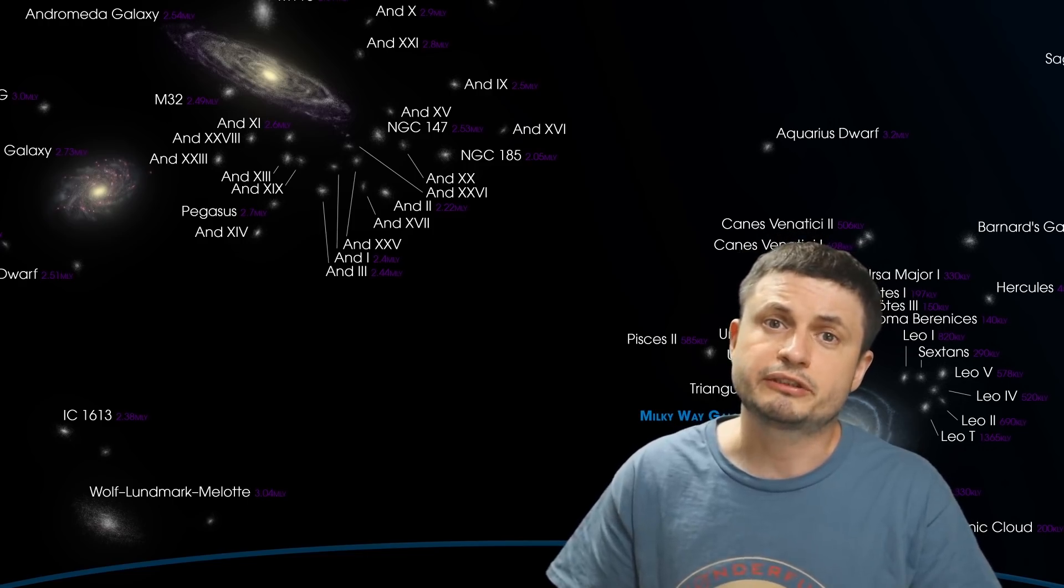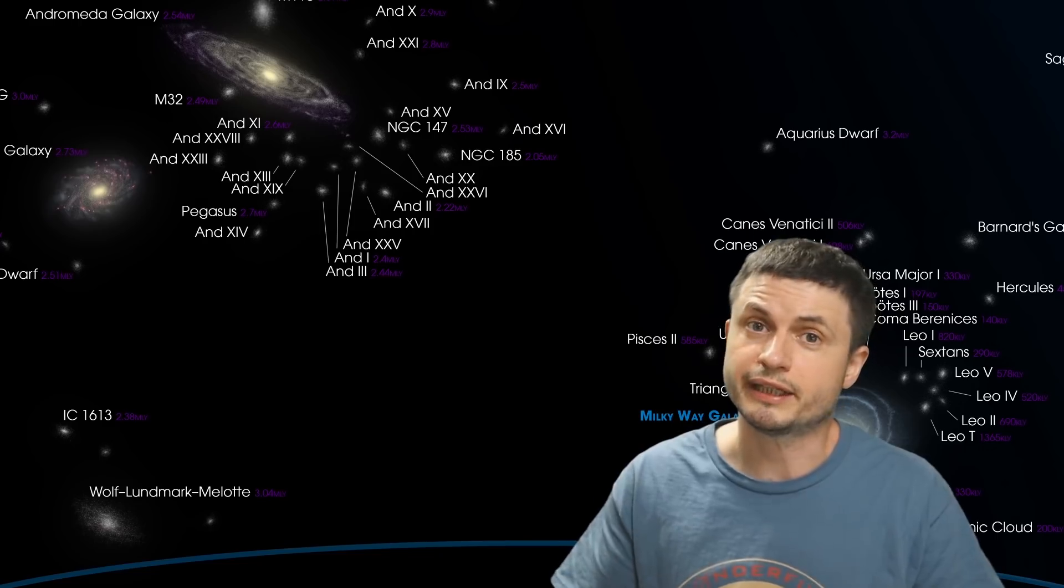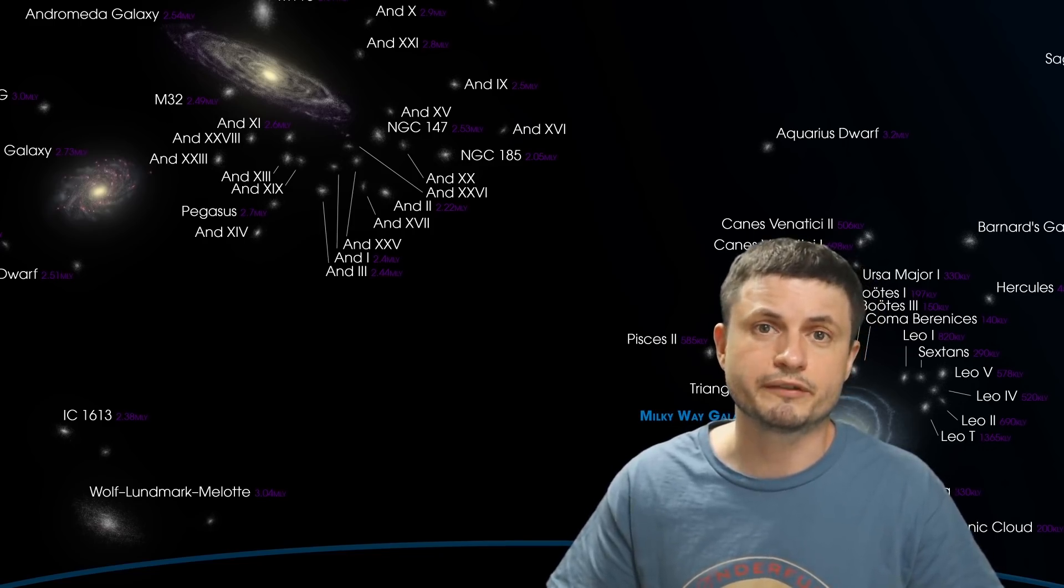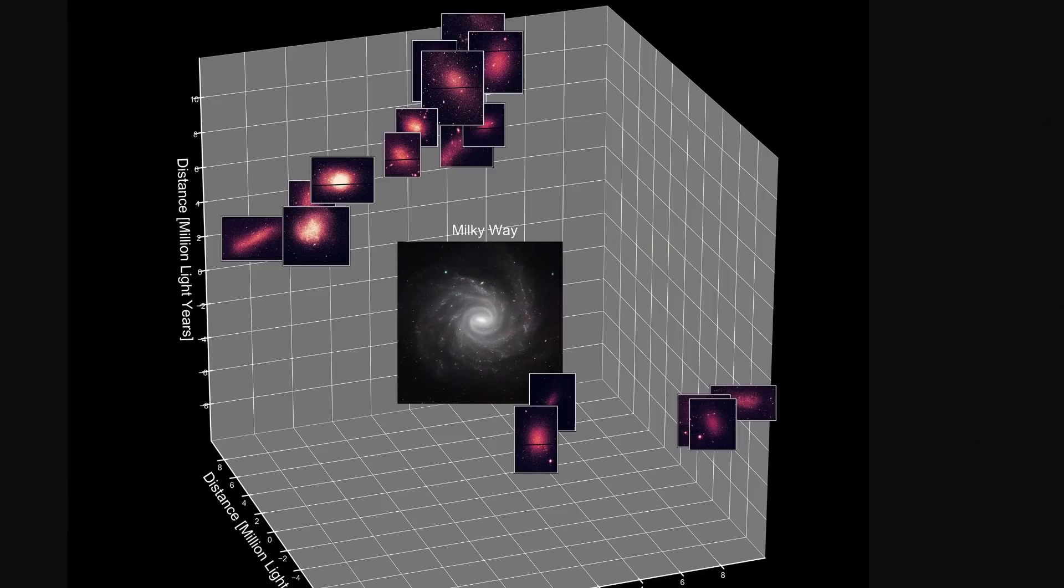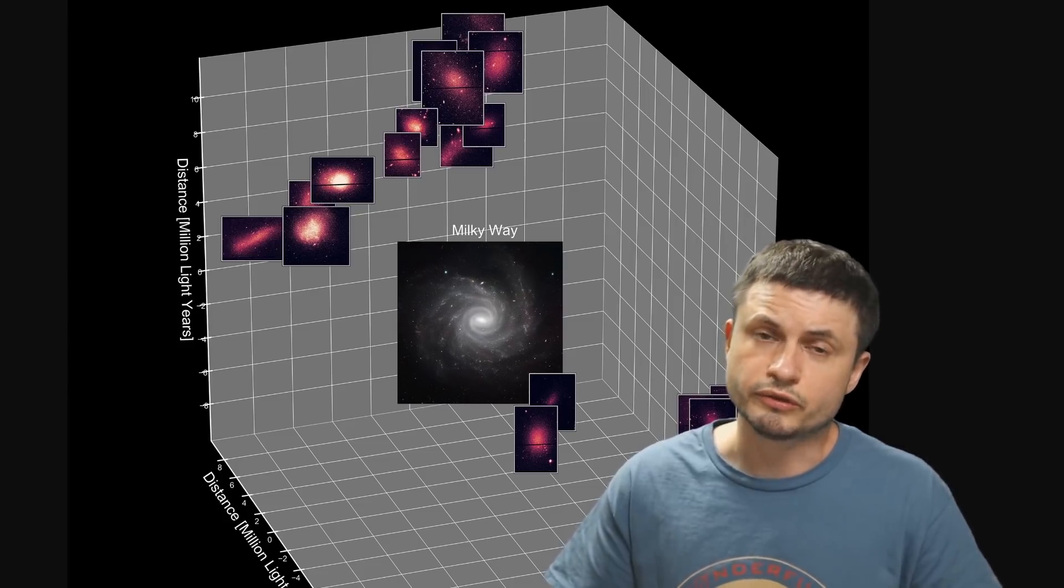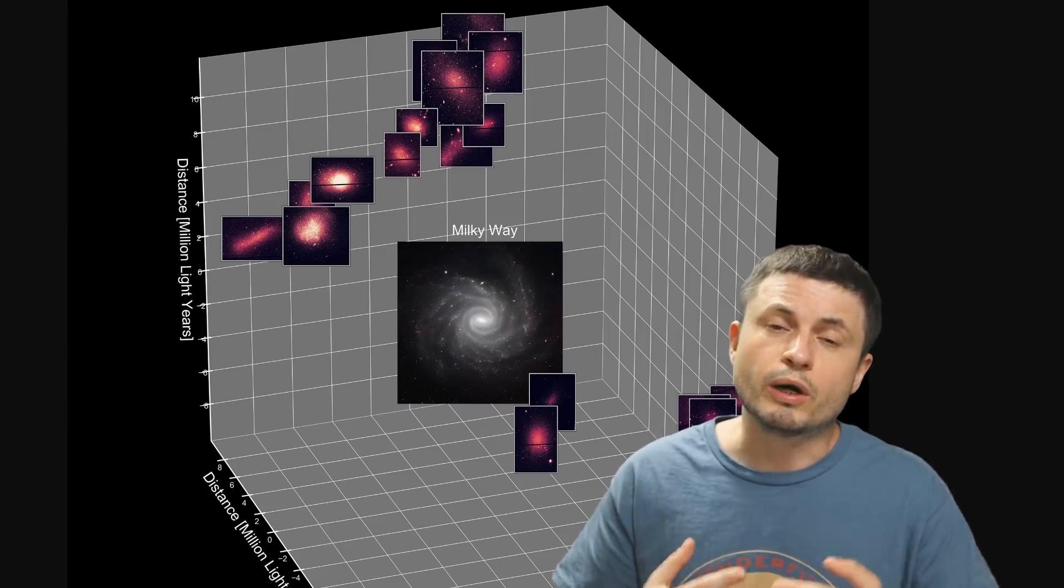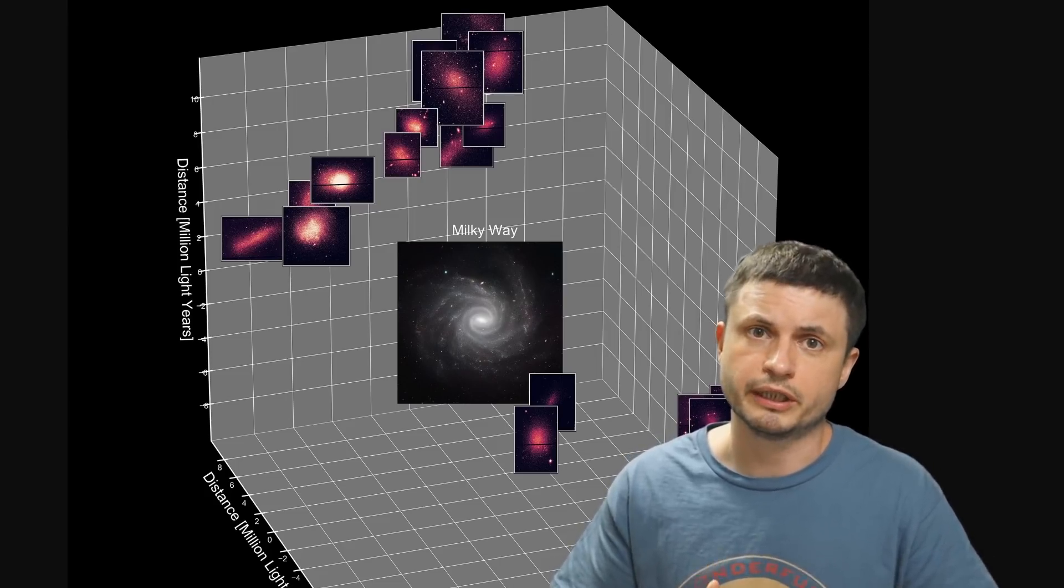But for this particular study, the scientists looked even beyond that, all the way to about 13 million light years away from the Milky Way galaxy. And here is sort of what the map of all of this looks like, with some of the galaxies being visible in this particular picture. And it's important to understand that all of these galaxies are really far away from each other, with most of them being at least 1 million light years away from one another.